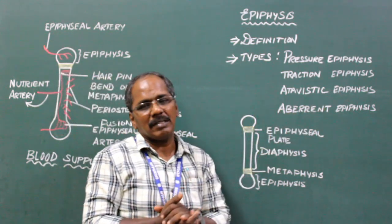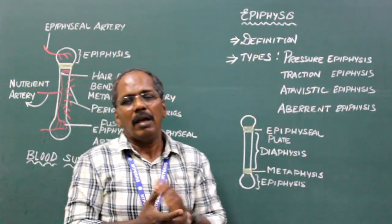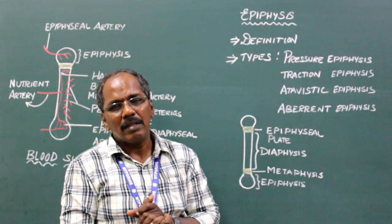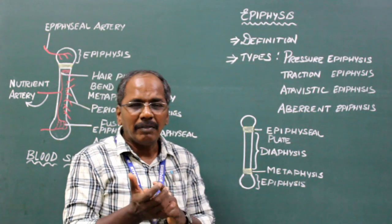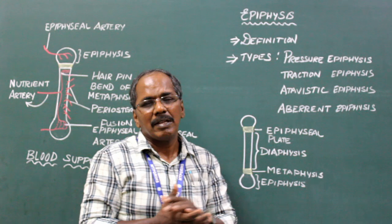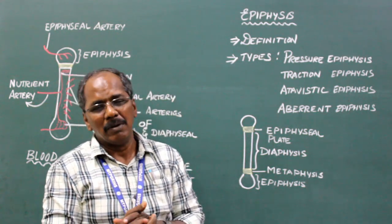Aberrant epiphysis is not always present. Examples: head of first metacarpal bone and base of other metacarpal bones.